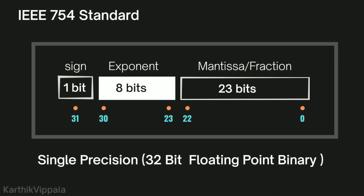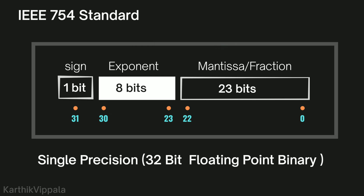The format for single precision is as shown. It is 32 bits: the MSB bit represents the sign, the next 8 bits represent the exponent, and the next 23 bits represent the mantissa. In the sign bit, the value will be 0 or 1 — 0 indicates a positive number and 1 indicates a negative number.